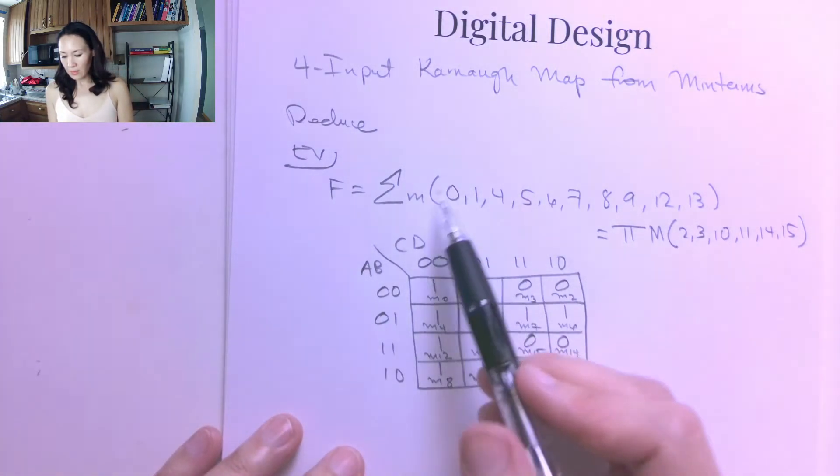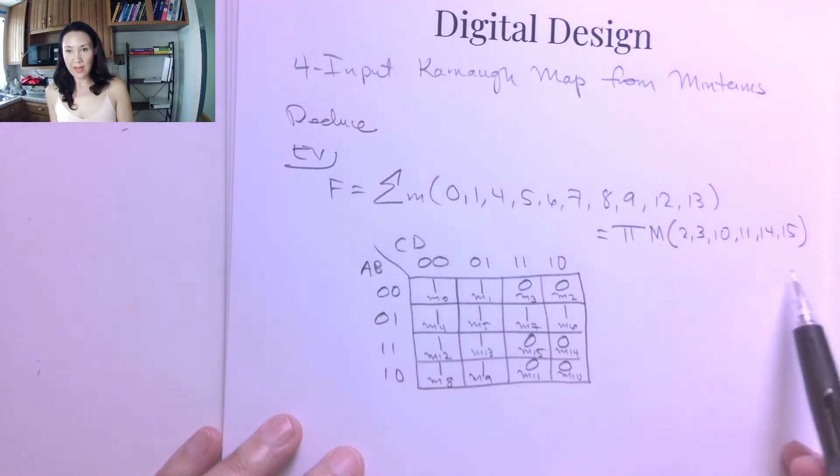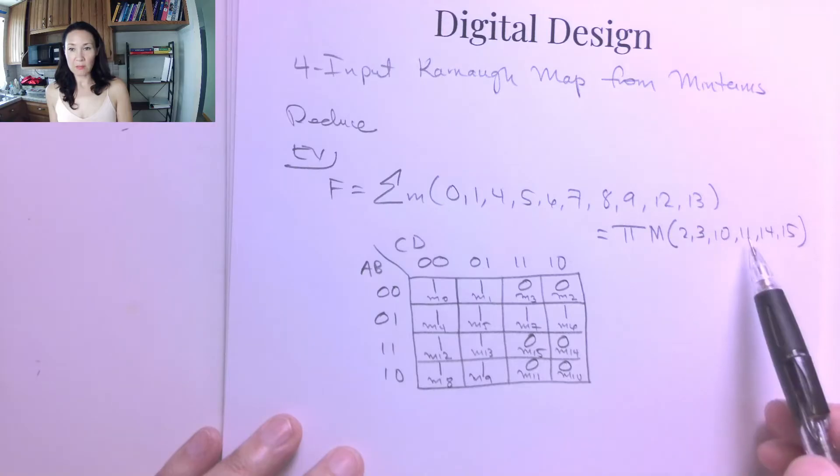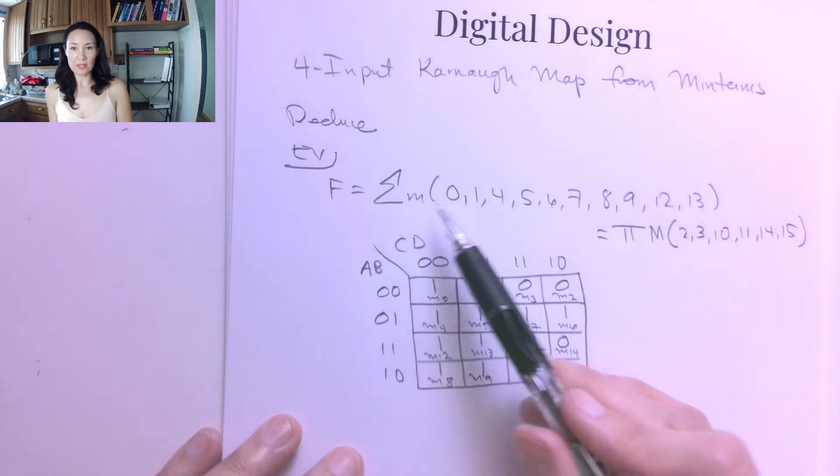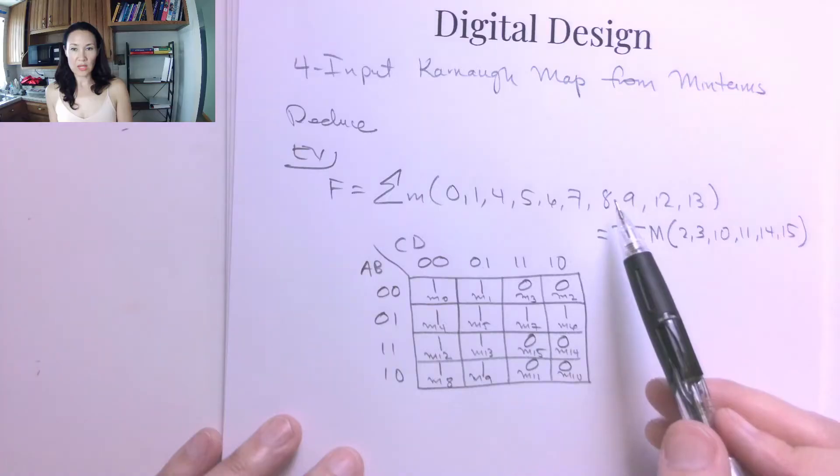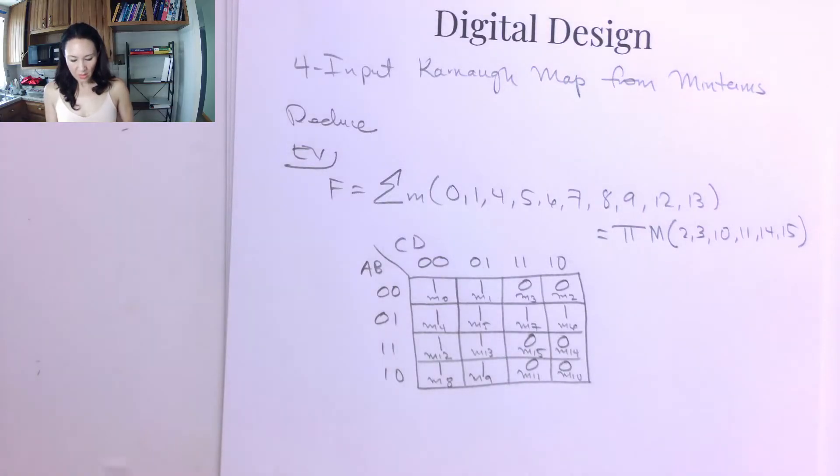So either way, if you're given the function in minterms or max term notation, you can put it into this kmap. If it's in max term notation, you know where all the 0s are. If it's in minterms notation, these locations give you where all the 1s are. Okay, great.